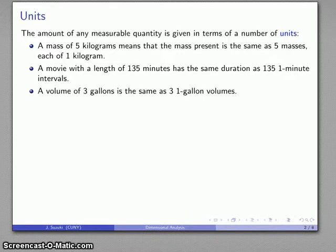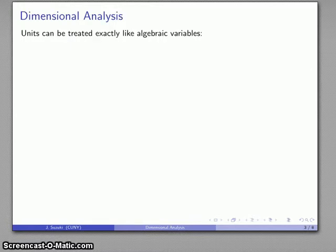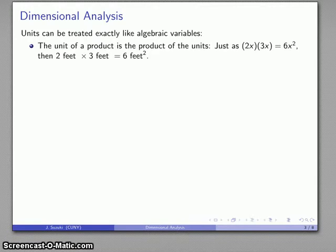This might seem to be adding an extra layer of complexity to any problem, but actually it makes it a lot easier because units can be treated exactly like algebraic variables. That's the basis for dimensional analysis. For example, if I multiply 2x times 3x, I know that I should get 6x squared. The coefficients multiply, the variables multiply.